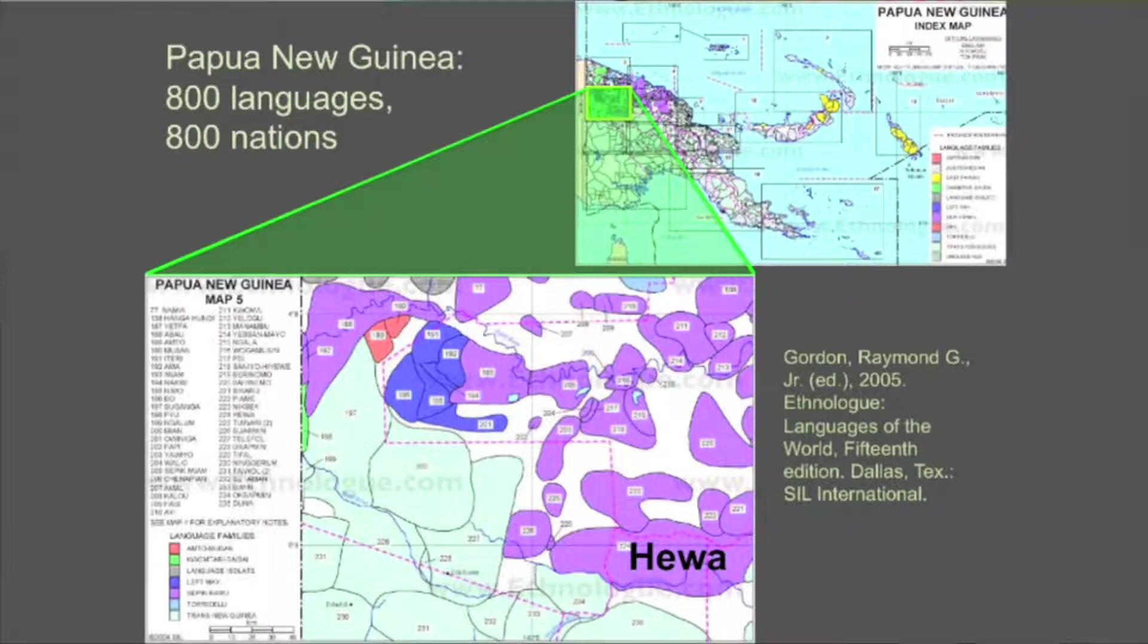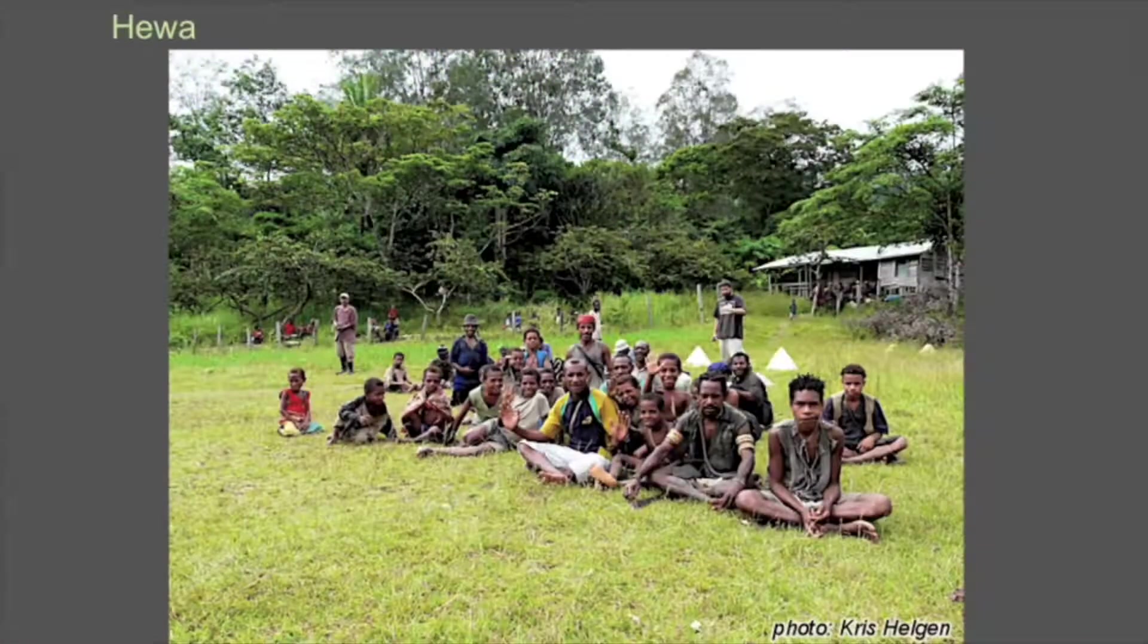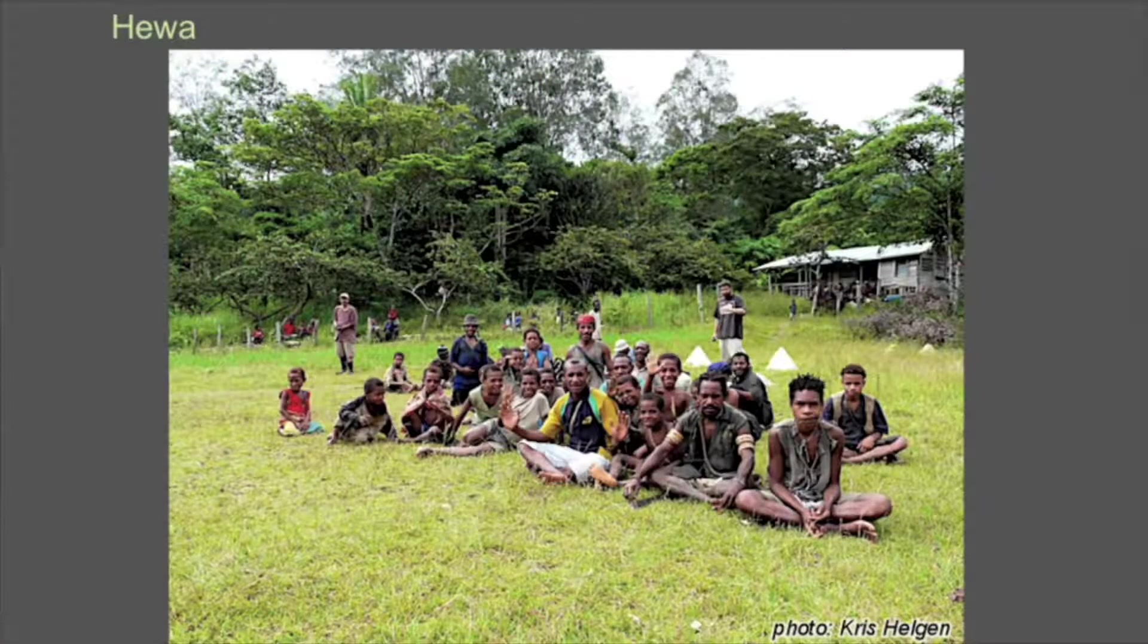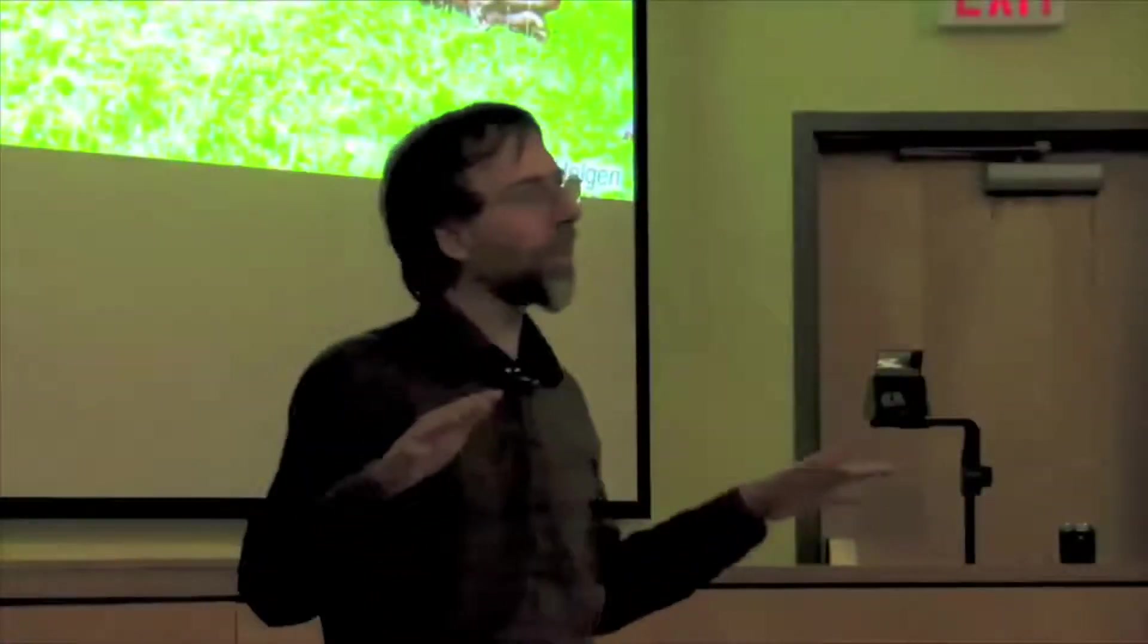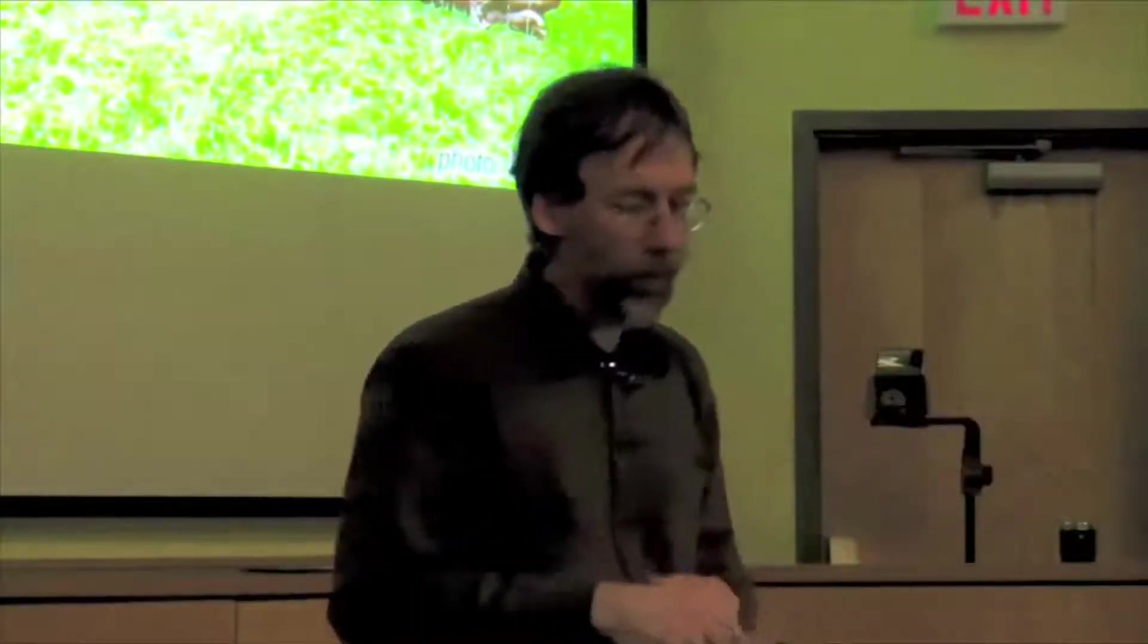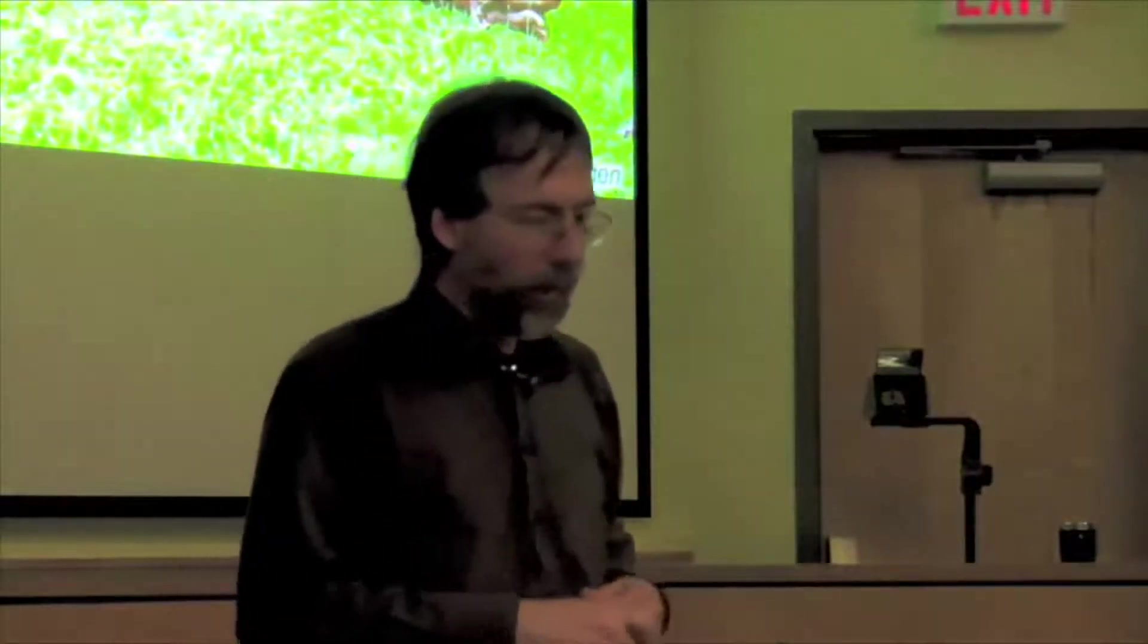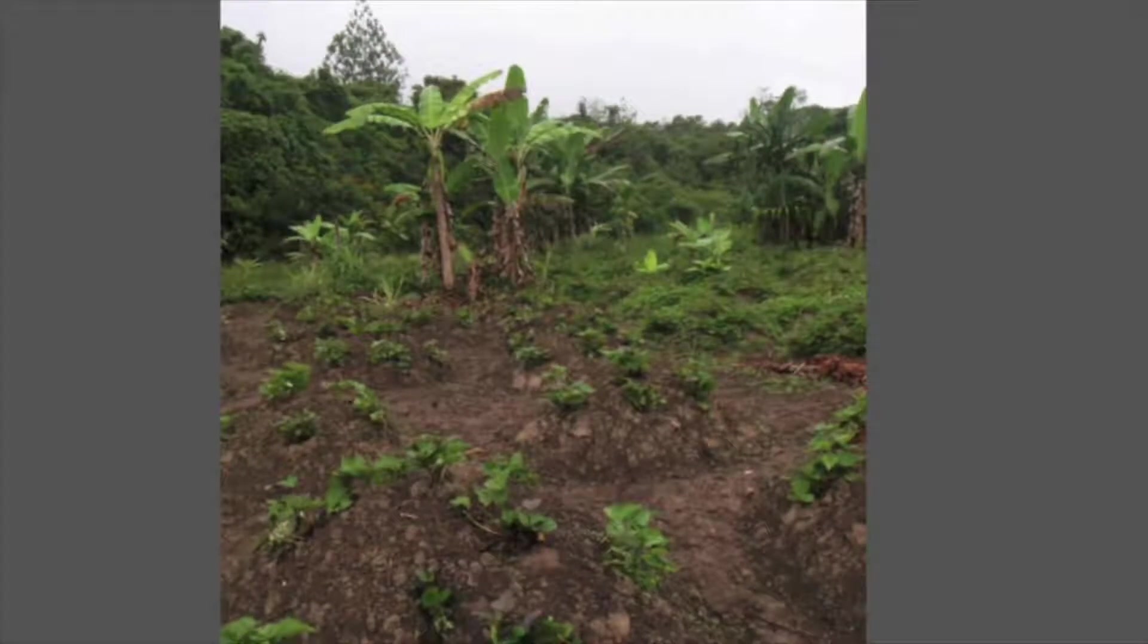So the area we went in particular was the big purple dot at the bottom, the land of the Hewa. Here is a group of Hewa greeting us as we arrived. This is on the airstrip. Most of the families live more or less scattered through the forest in family plots, but there is somewhat of an accumulation at the airstrip. The Hewa make a living primarily as subsistence farmers - sweet potatoes, peanuts, bananas, a few other things, as well as hunters.